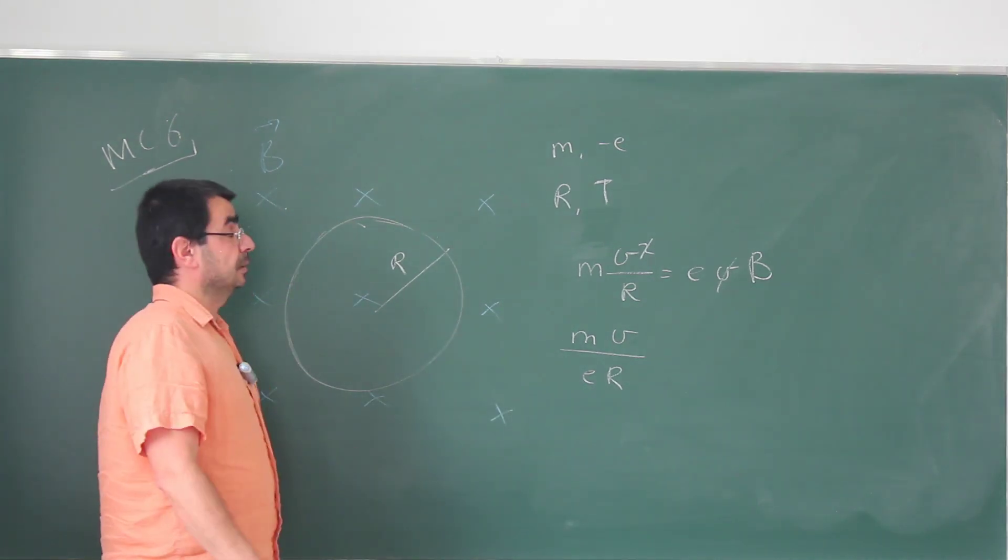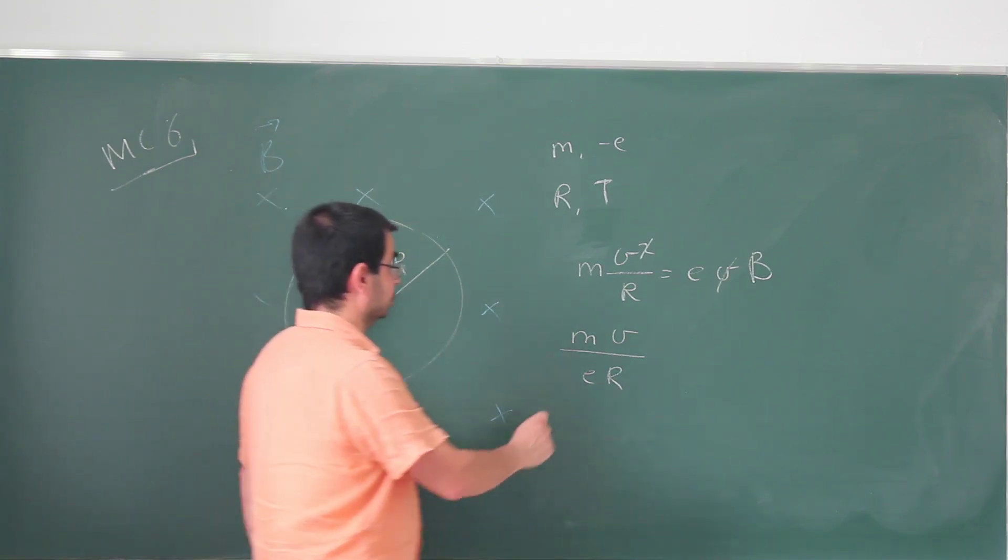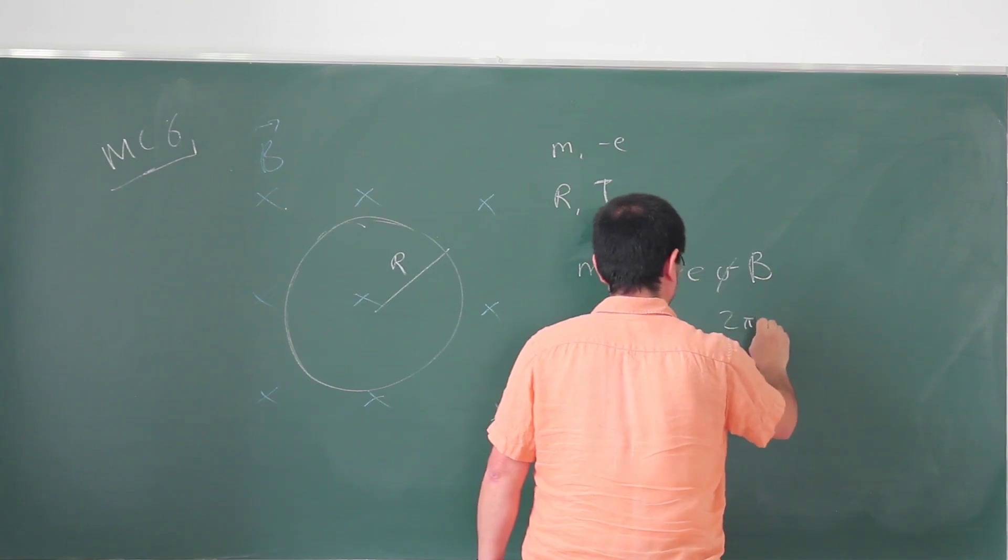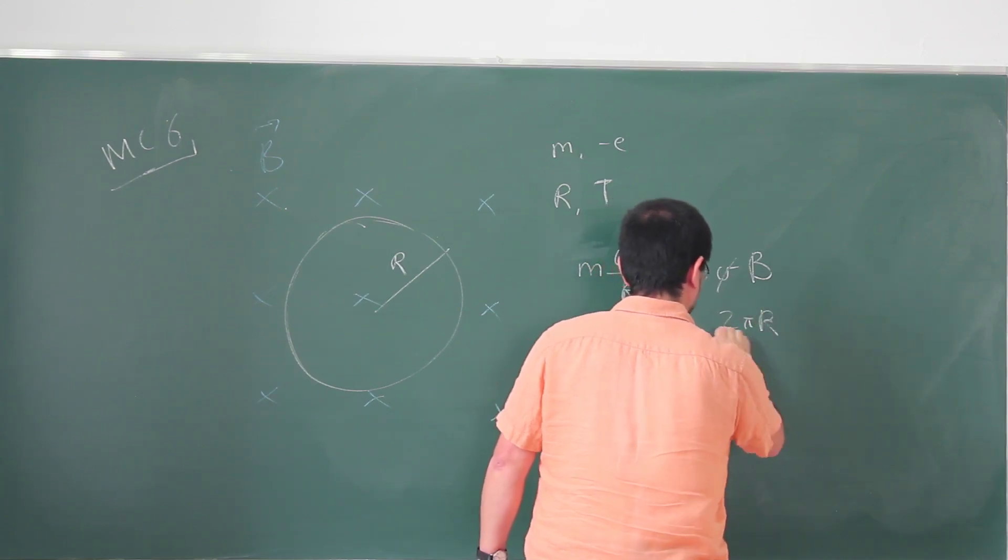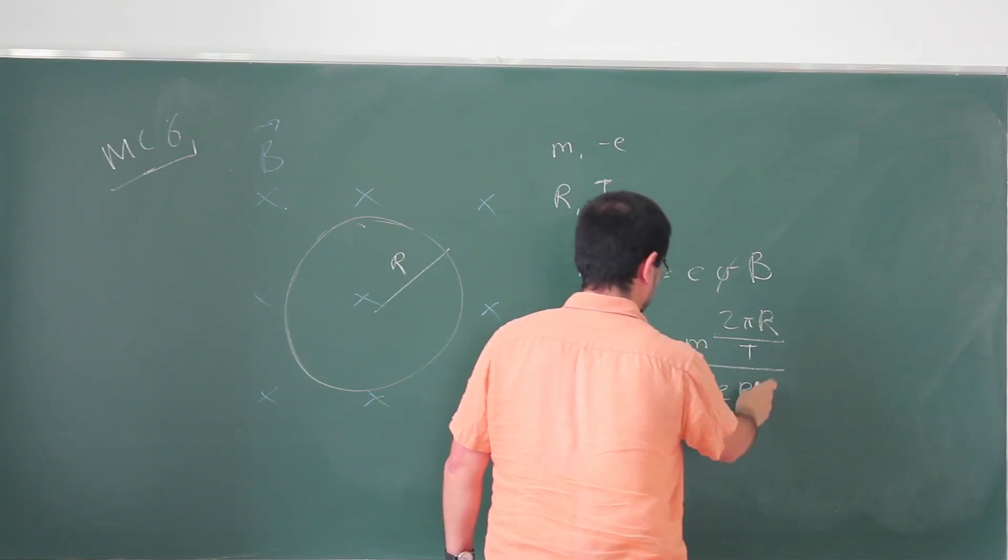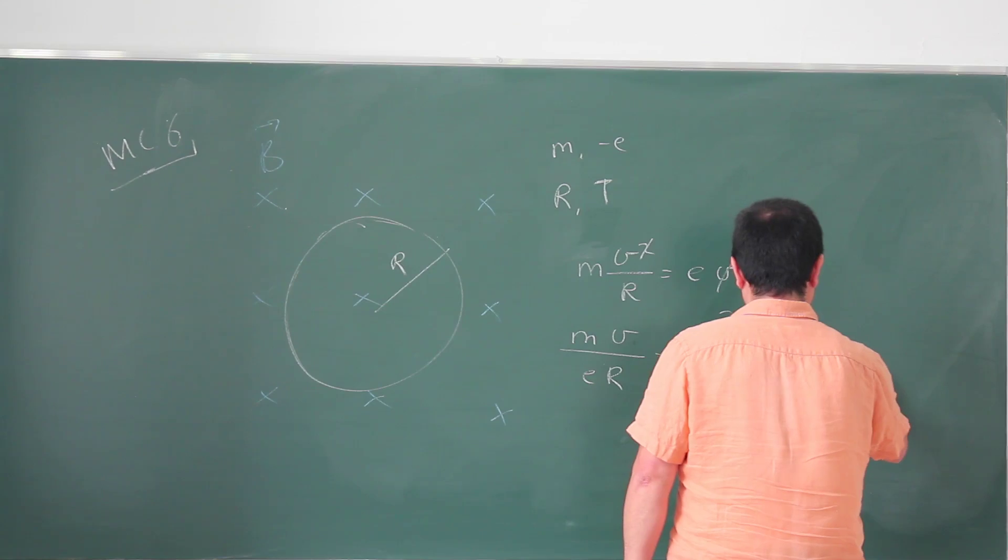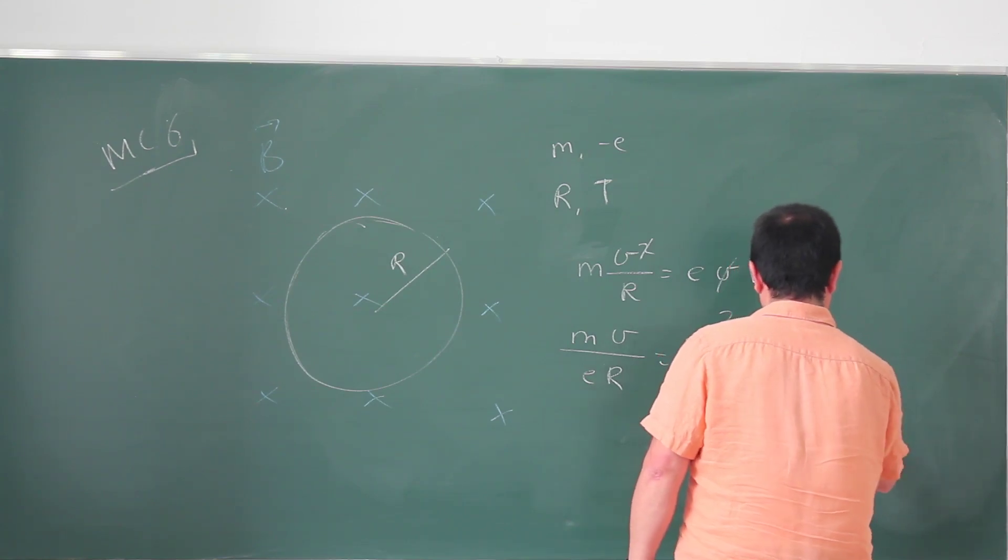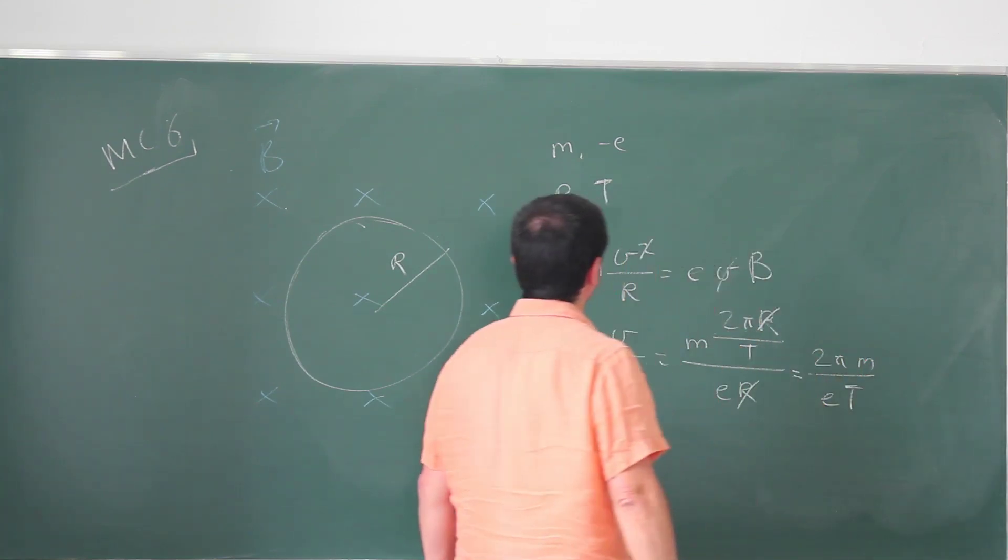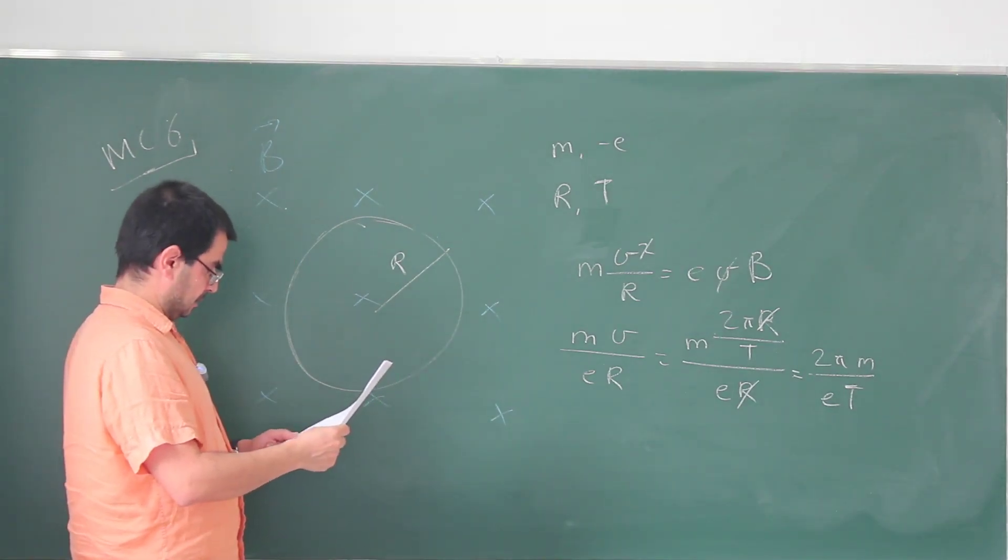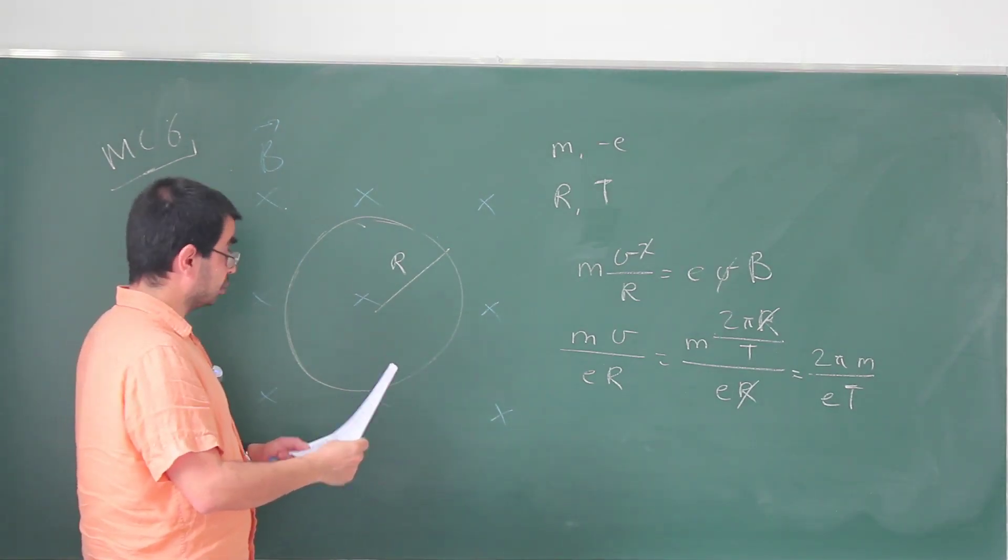It's just going to be M times the circumference, which is 2πR, divided by the period, equals ER. R's go away. So this is going to be 2πM over E times T. So this now is expressed in terms of the given quantities. And this would be choice A.